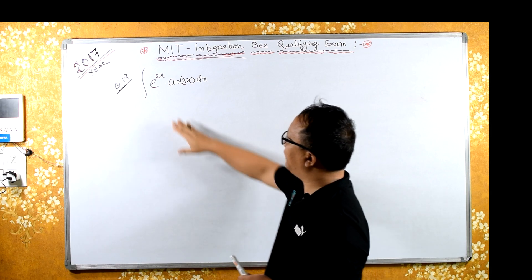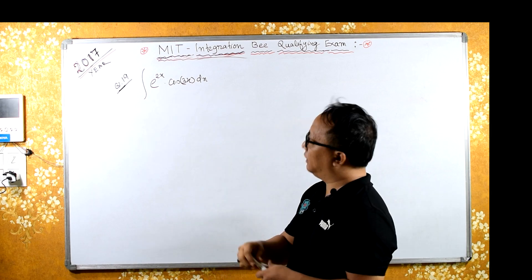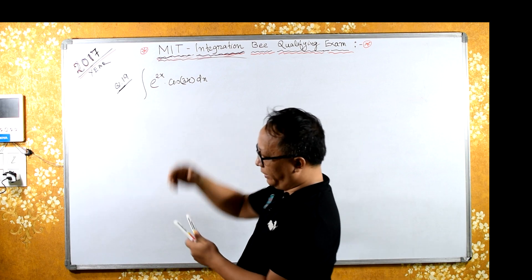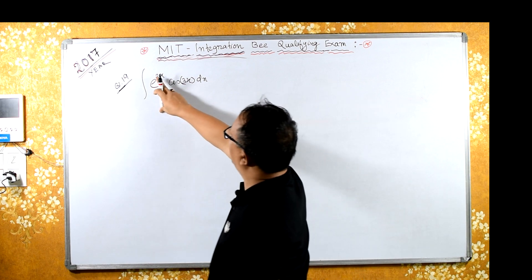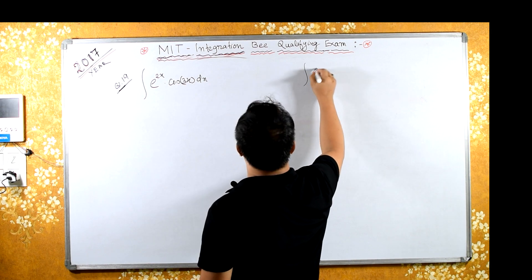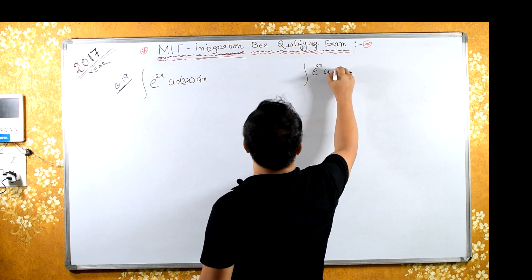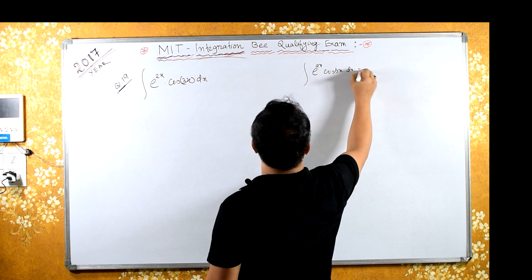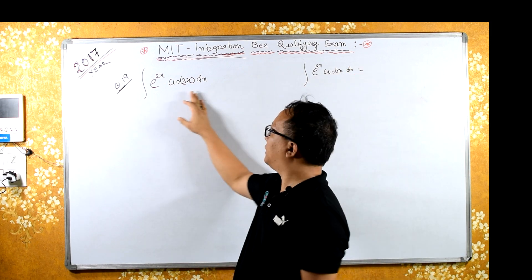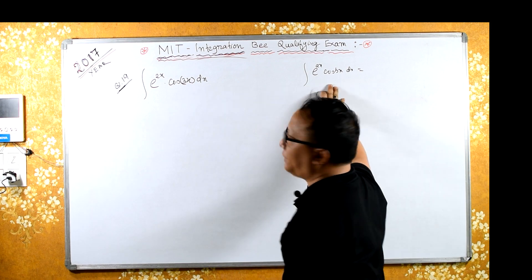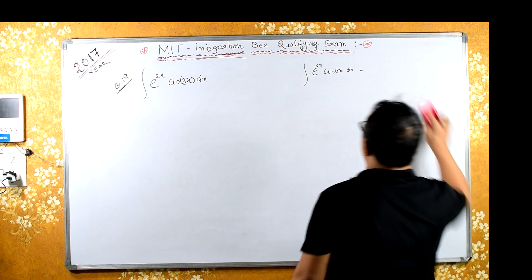The given integration is integral of e raised to 2x into cos(3x) dx. We have a standard formula for the integration of e^(ax)·cos(bx)dx. You can apply this directly and get the answer, but by integration by parts, you have to do it two times, which will be lengthy.